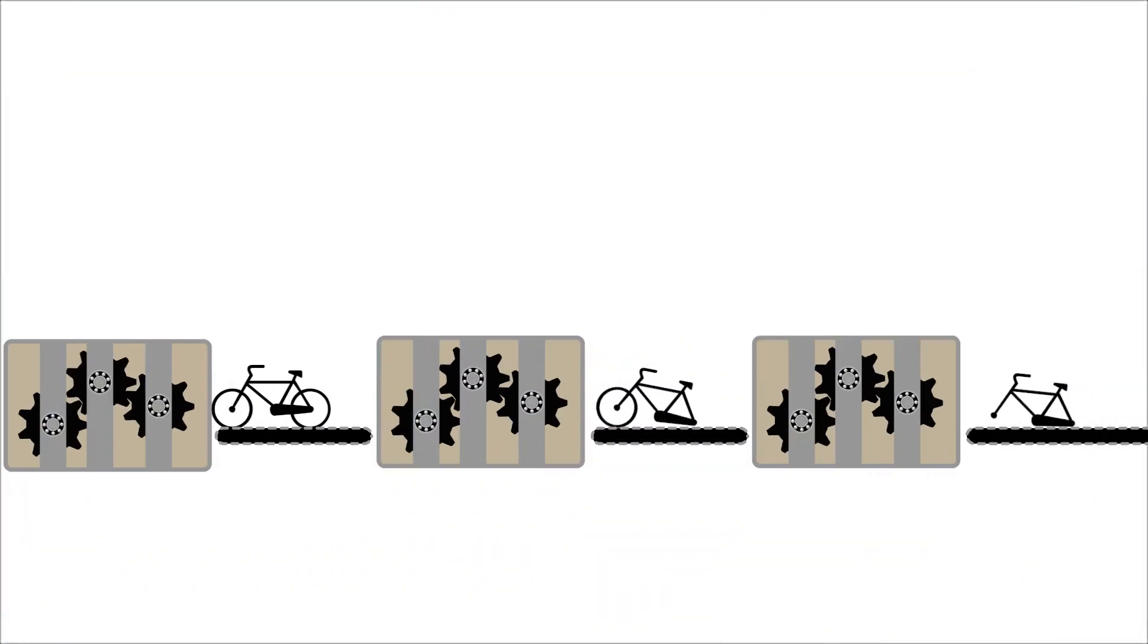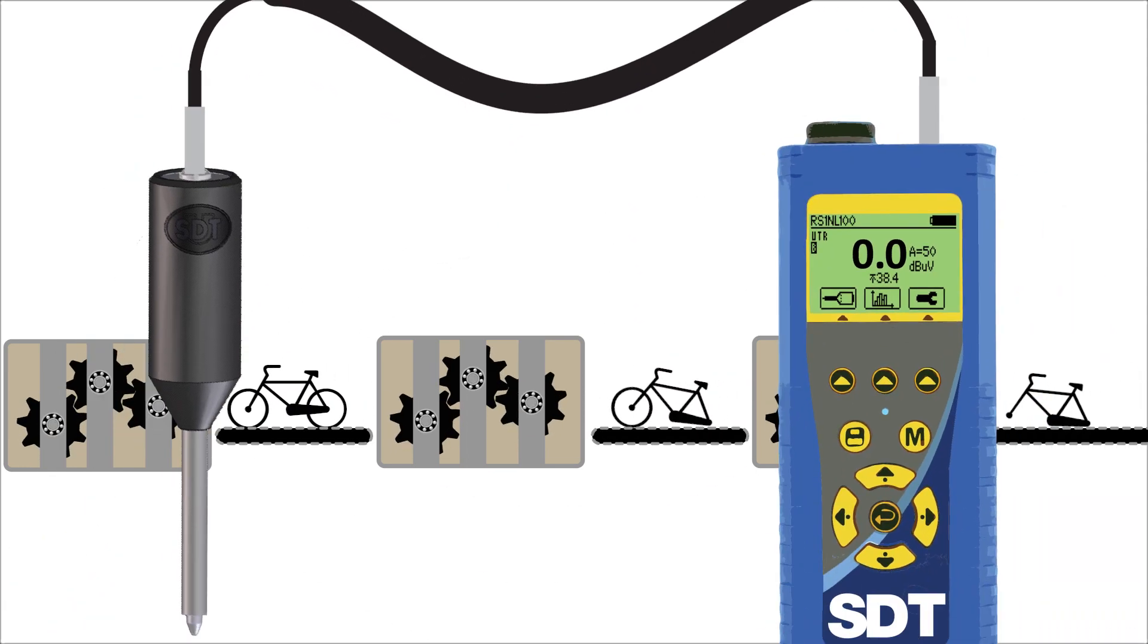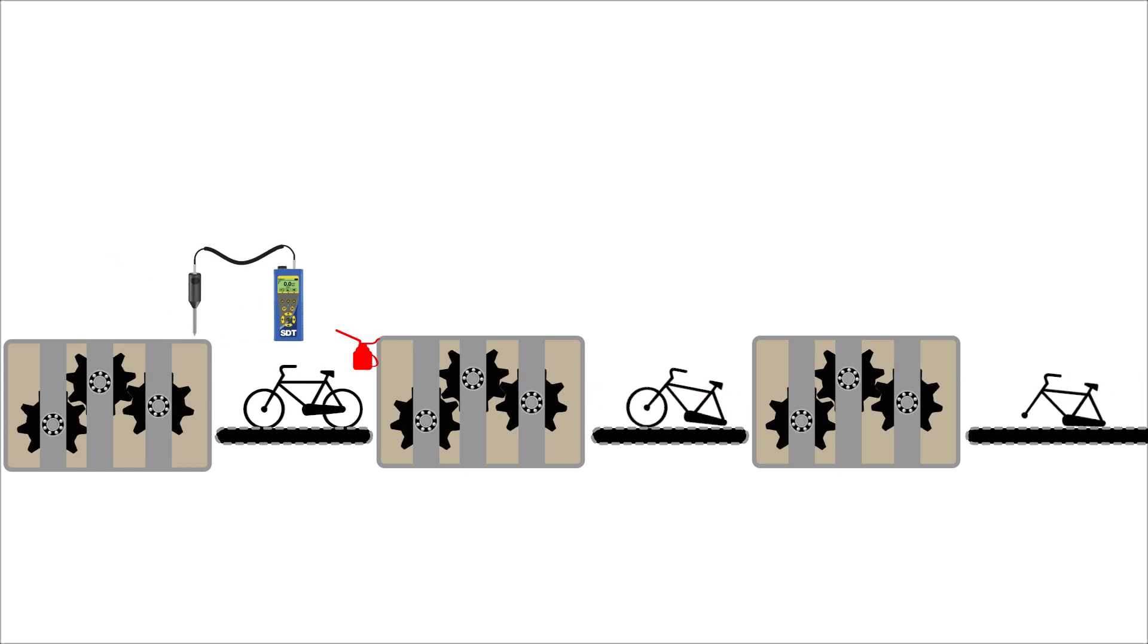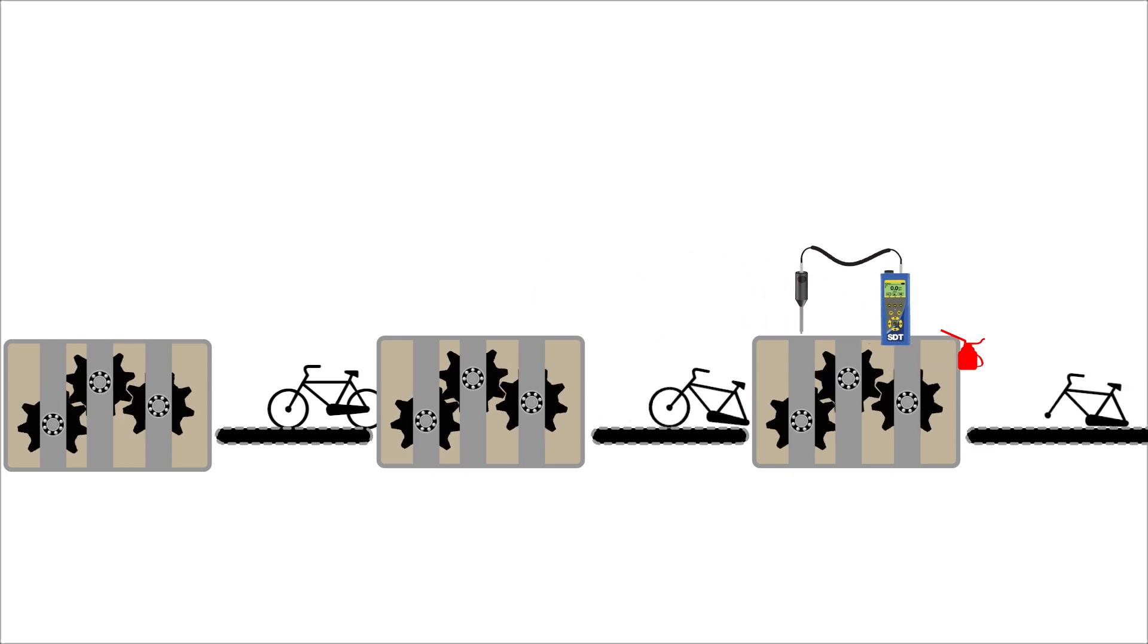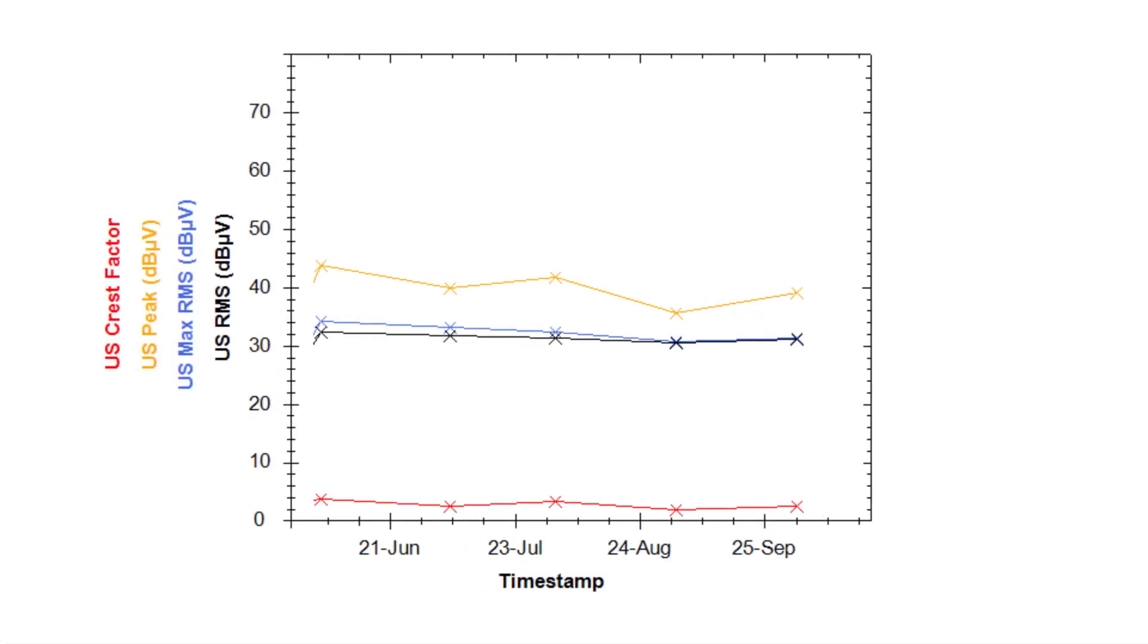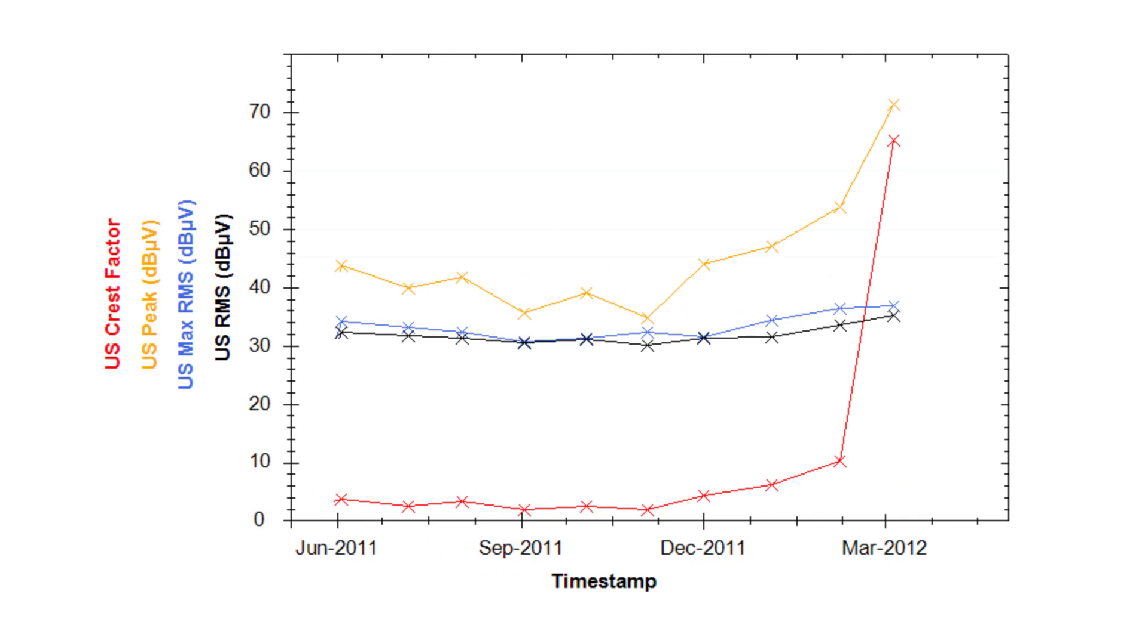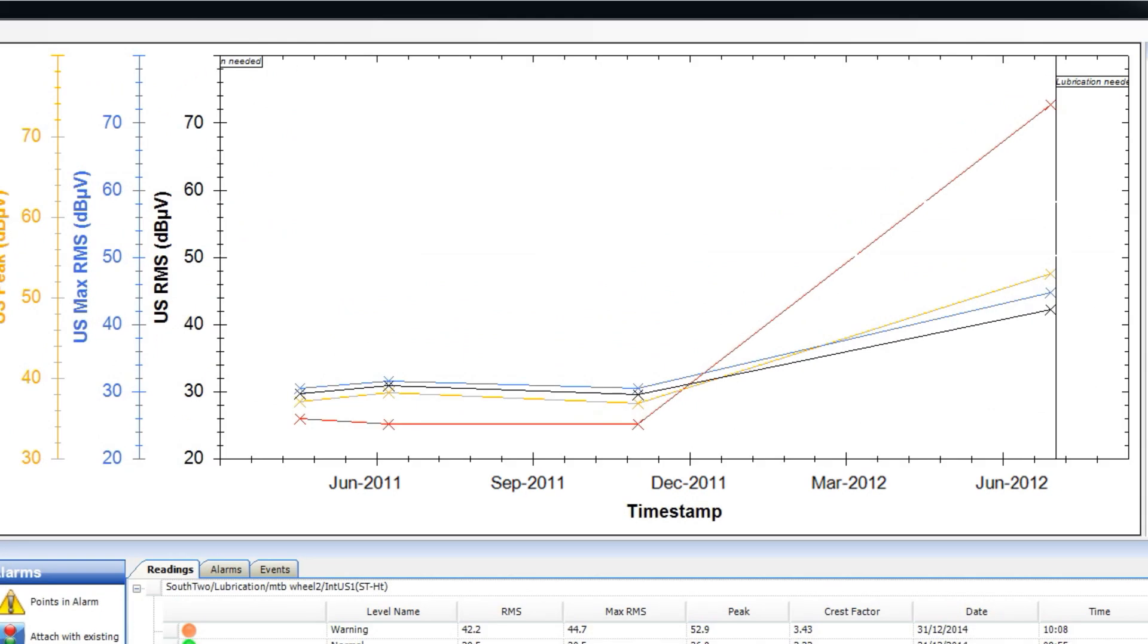Companies looking to optimize lubrication practices have adopted a conditional approach. By monitoring the friction levels of bearings with ultrasound, they can determine when the lubricant has deteriorated and needs replacement. Trending against an established decibel value, increased friction levels are quickly spotted and alarms triggered. It becomes a standard practice to sort good bearings from those that require the attention of the lubrication technician.